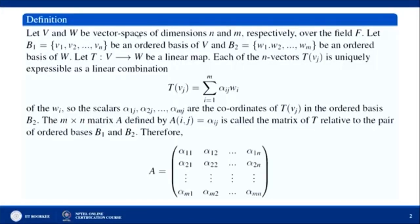Let V and W be vector spaces of dimensions n and m respectively — two finite dimensional vector spaces over the field F. Let B1 = {V1, V2, ..., Vn} be an ordered basis of V, and B2 = {W1, W2, ..., Wm} be an ordered basis of W. Let T from V to W be a linear transformation.